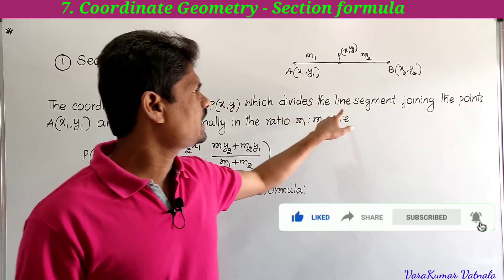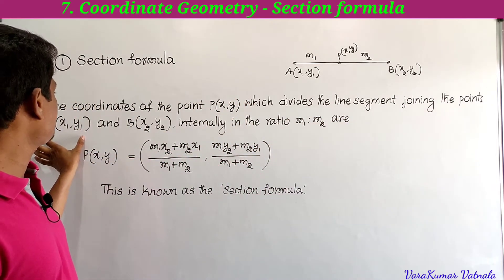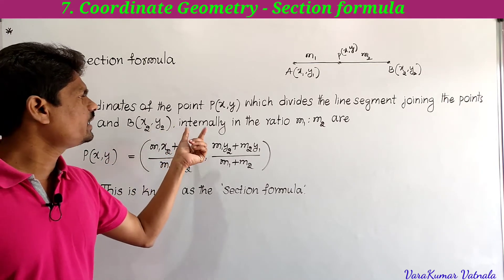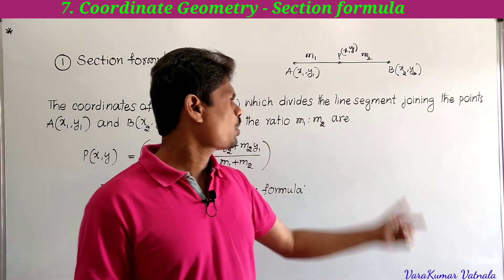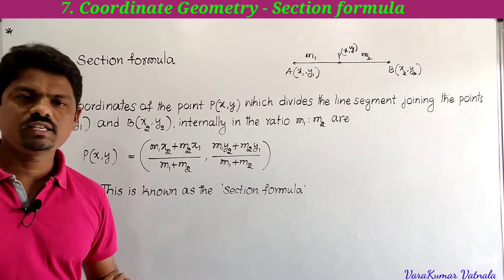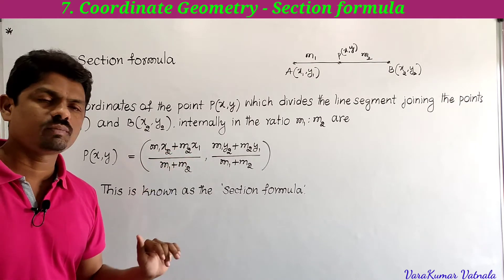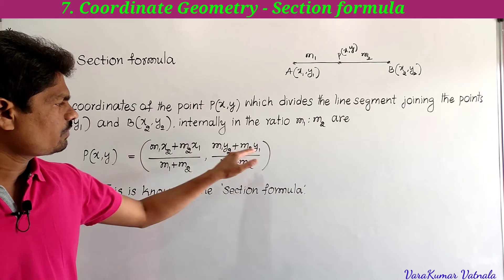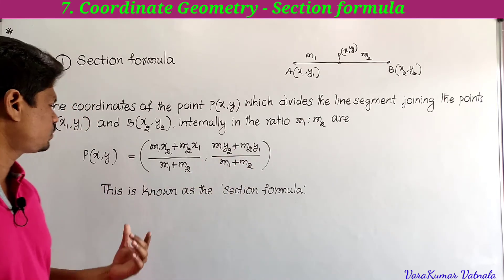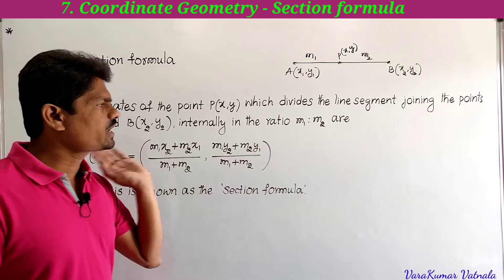...which divides the line segment joining the points A(x1, y1) and B(x2, y2) internally in the ratio m1 : m2 are given by: P(x, y) = ( (m1·x2 + m2·x1) / (m1 + m2) , (m1·y2 + m2·y1) / (m1 + m2) ). This is known as the section formula.